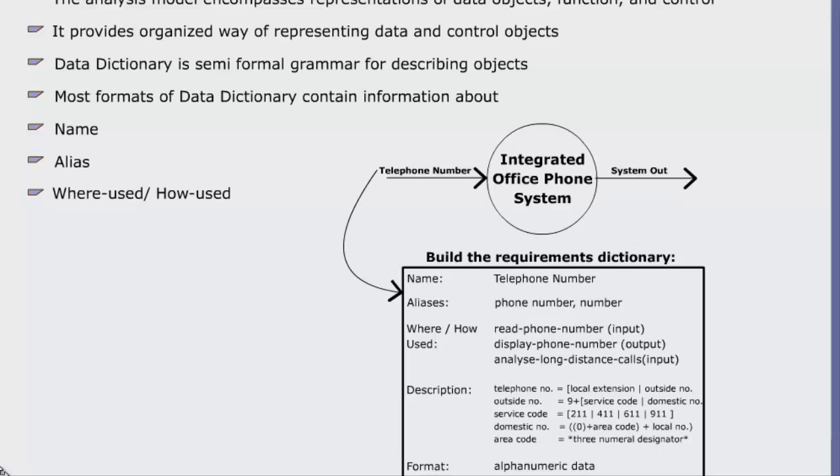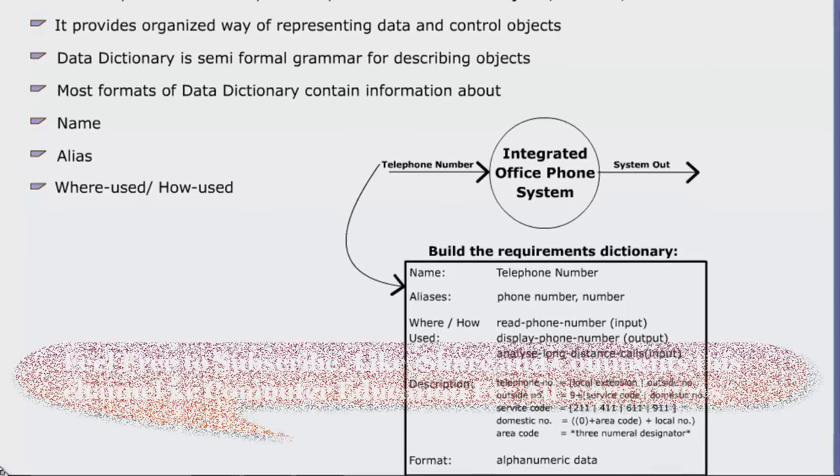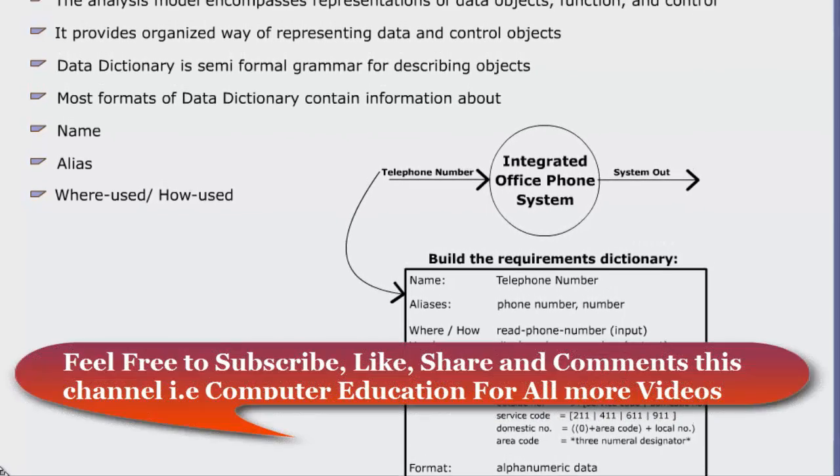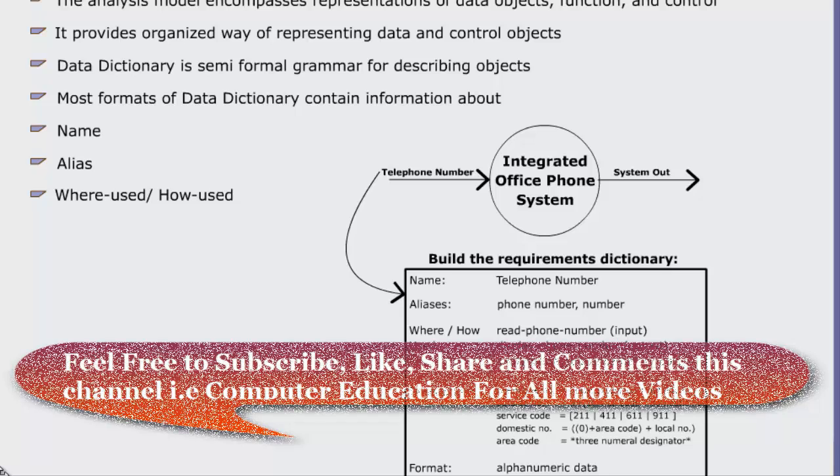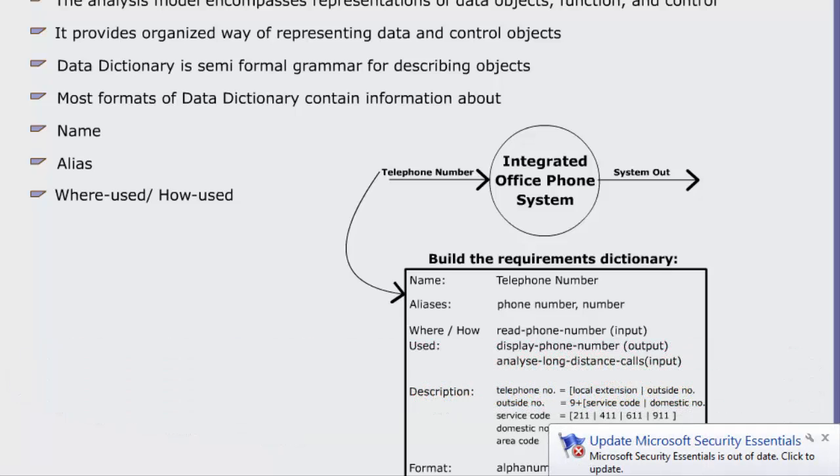Where used, how used process: a listing of the processes that use the data or control item and how it is used. For example, input to the process, output from the process, as a store, as an external entity.